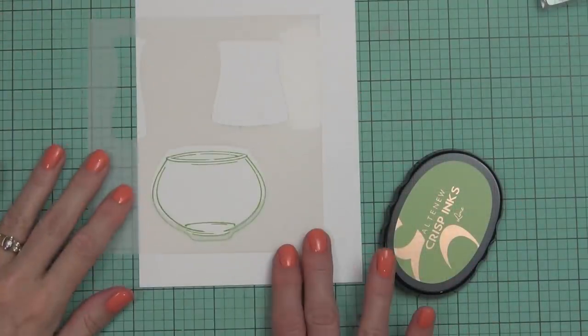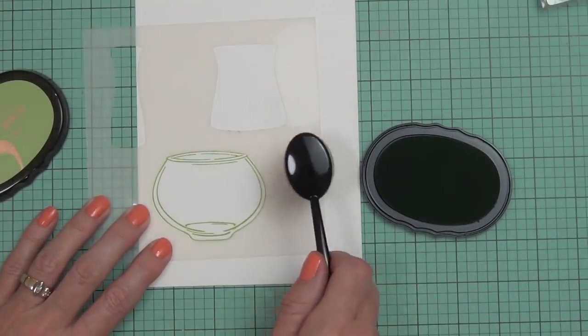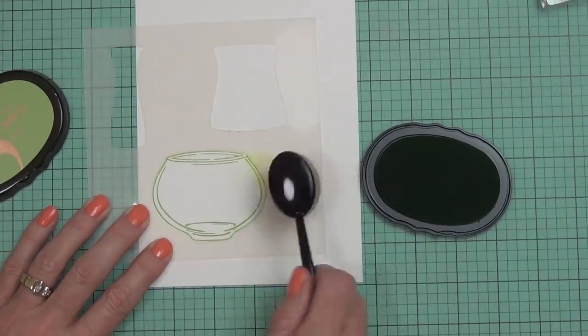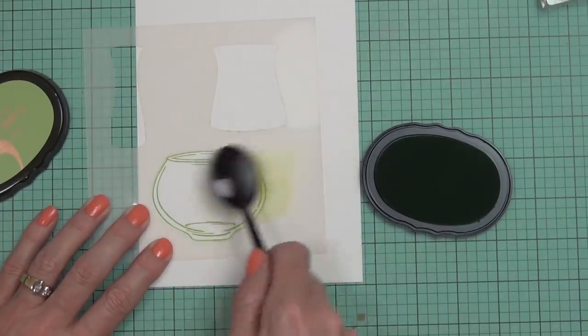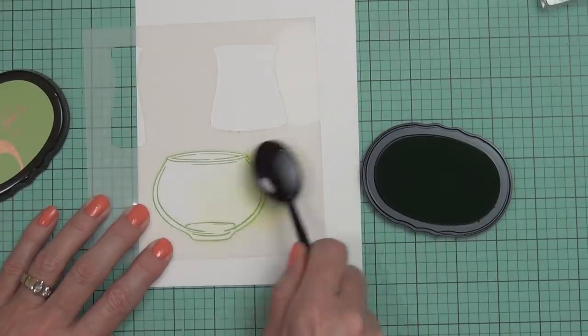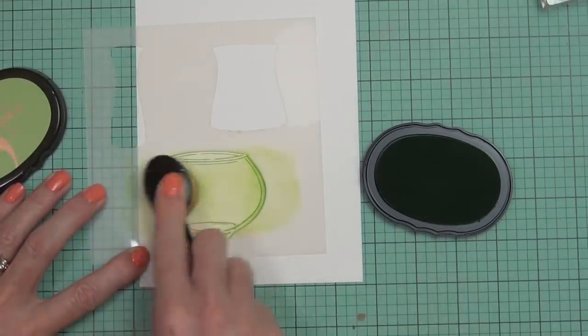I'm going to be making two cards today and focusing on one card at a time. They're not very similar cards other than the fact that they both have the same basic layout and they're both using the Versatile Vases, so I thought I'd do one card and then walk you through the second card a little bit quicker.